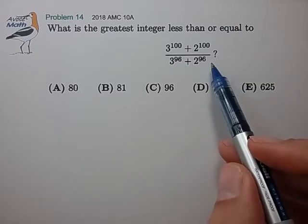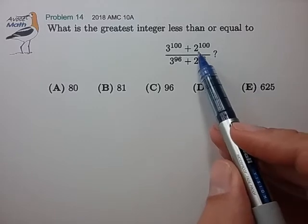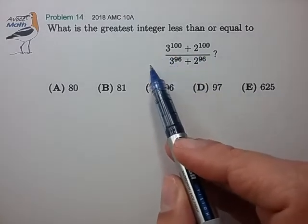Looking at this expression, it seems like we'll probably have to factor out some exponent of 2 or some exponent of 3 from both the numerator and the denominator.